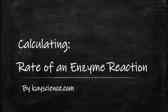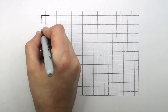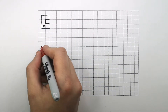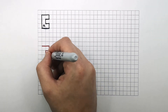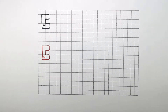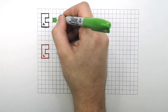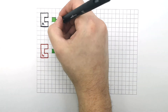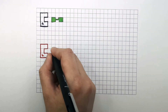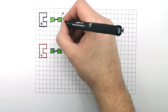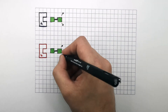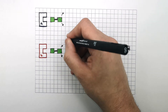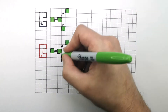Calculating the Rate of an Enzyme Reaction by kscience.com. This here is enzyme A, and this here is enzyme B. We're going to test which enzyme can break down this substrate into products in the quickest time — so which enzyme will have the fastest rate of reaction.